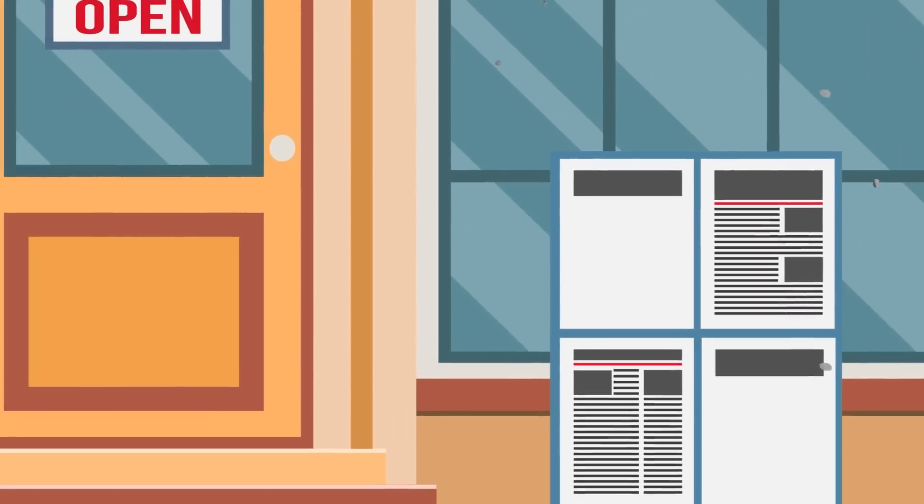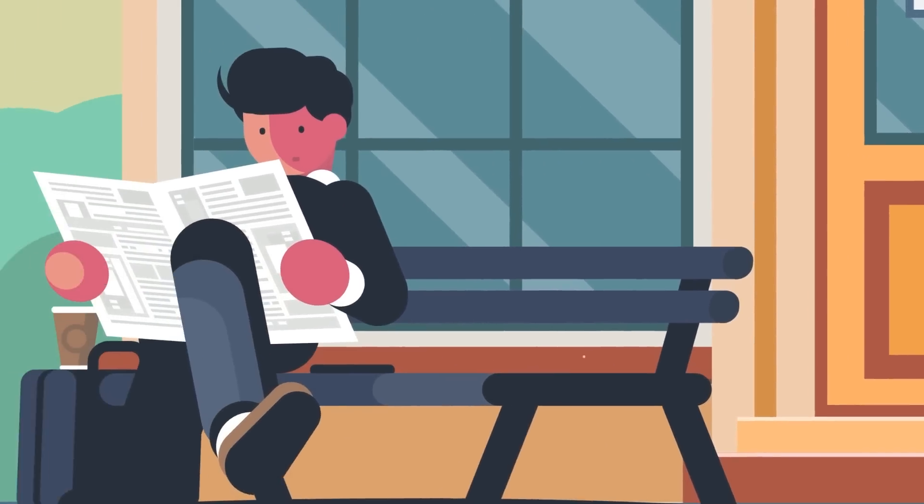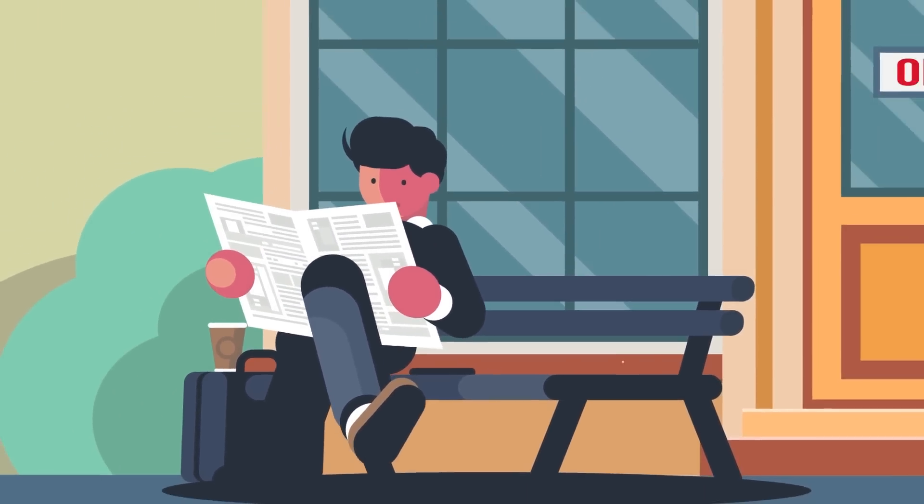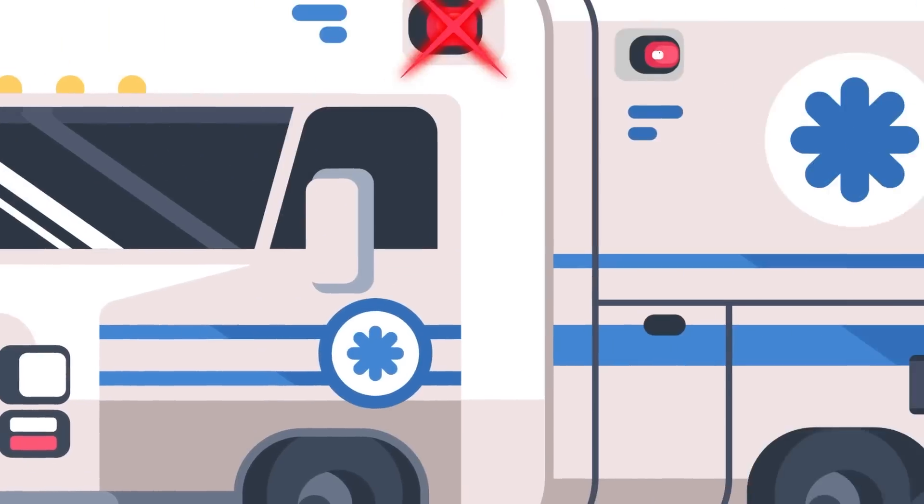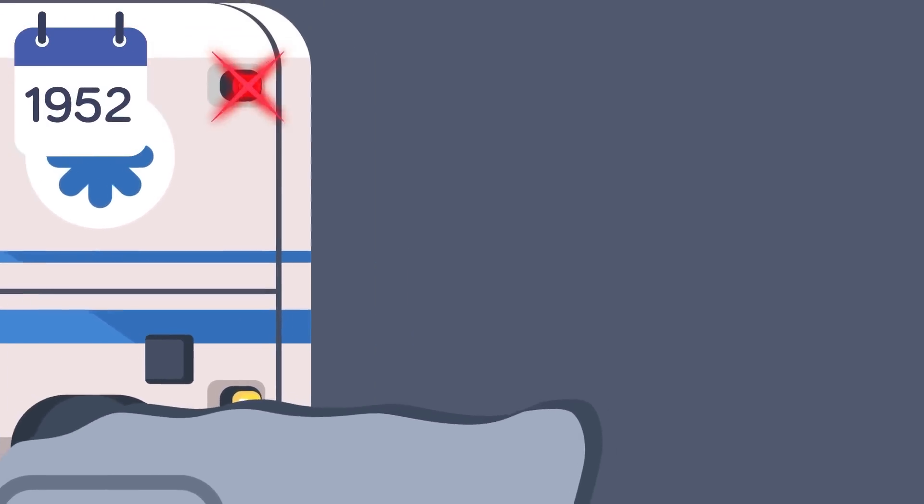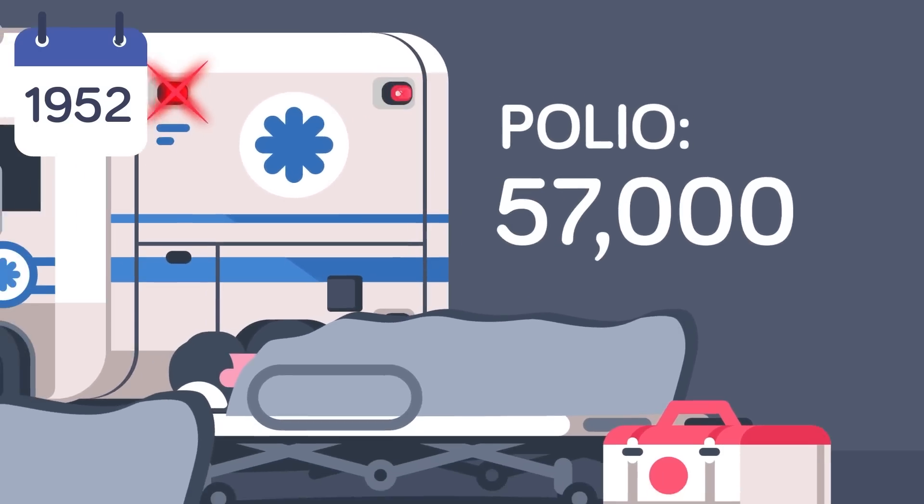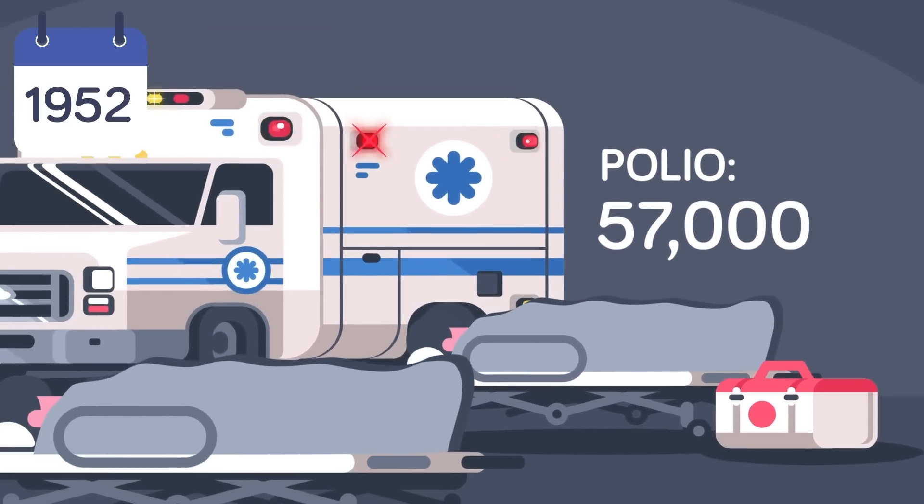As incidents of polio rose across Europe and North America, the disease reached a high enough level of infection rate and had spread wide enough for it to be considered an epidemic. At its peak in 1952, there were well over 57,000 cases of polio in the United States within a single year.